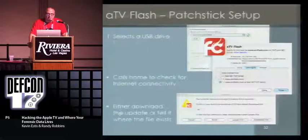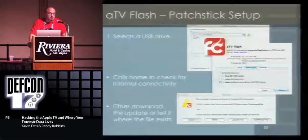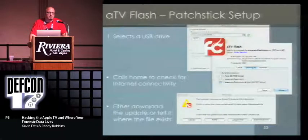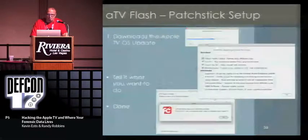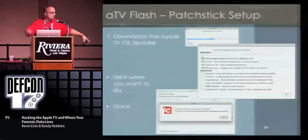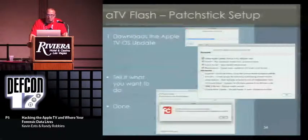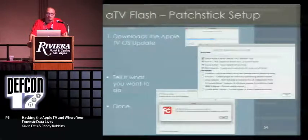ATV Flash will integrate with the Neato TV Smart Installer, which is important. The basic process: select the USB drive, it calls home, but only in order to check for an internet connection. It does require an internet connection to download one of the Apple TV OS firmware updates. After it downloads the update, it's got a nice checklist menu. You can install apps like ATV files, Air Control, XBMC, and Boxee, and you can disable the auto-update.